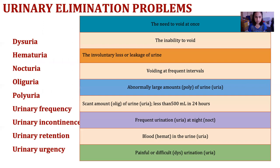We have different terms for elimination problems. We have dysuria, hematuria, nocturia, oliguria, polyuria, urinary frequency, urinary incontinence, urinary retention, and urinary urgency. Dysuria — 'dys' means difficulty — so it means painful or difficult urination. Hematuria — 'hema' means blood, 'uria' means urine — so there is blood in the urine.